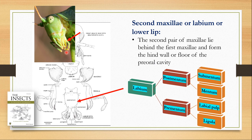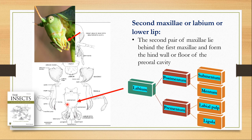The labium is divided into parts similar to the maxillae. The basal or proximal part is known as the postmentum and the apical part is known as the prementum. The postmentum is further divided into the submentum and the mentum. The prementum bears the labial palp and four lobes on the anterior side. These four lobes are known as glossa and paraglossa — the glossa are the internal ones and the paraglossa are the foot-like structures.